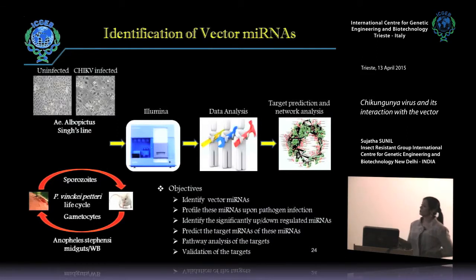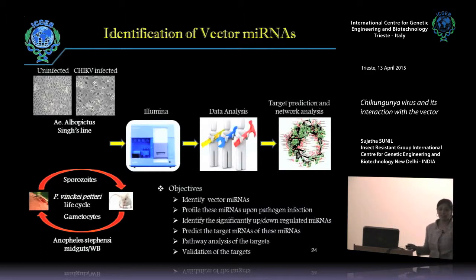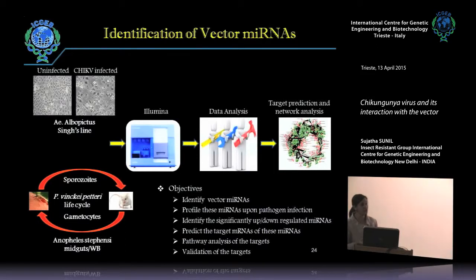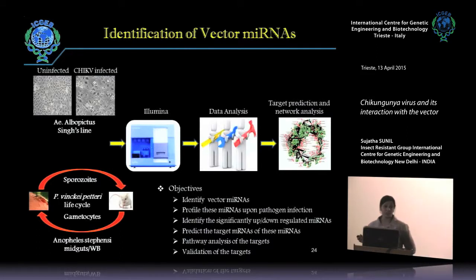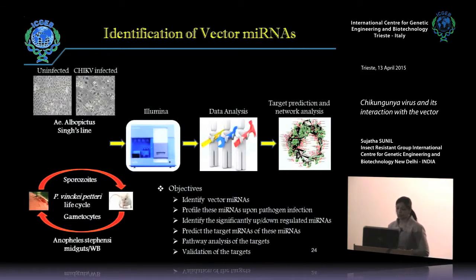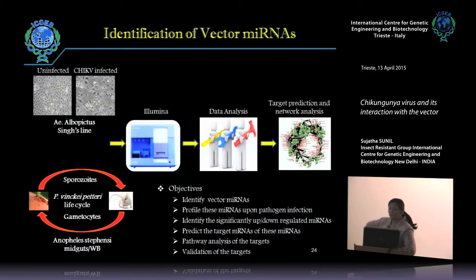We infected an albopictus cell line, and we also have an insectary where the mosquito cycle is ongoing. For Anopheles we use rodent malaria in mice; for chikungunya we can mix the virus with blood and give a membrane feed using an artificial feeding system to get the tissues we want. Our objective is to identify and profile vector microRNAs at specific time points of infection, then predict and validate microRNA targets and conduct pathway analysis.